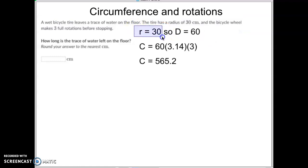We know that the radius is 30 so then the diameter would be 60. We know that to find the circumference we do the diameter which is 60 times pi which is 3.14 and because it's making three full rotations we'll multiply that answer by 3. So 60 times 3.14 times 3 equals 565.2.